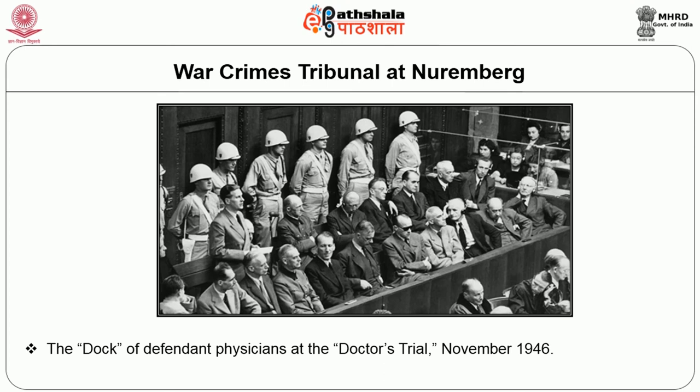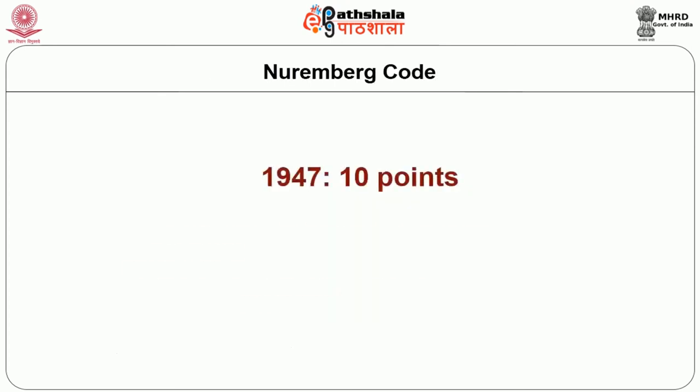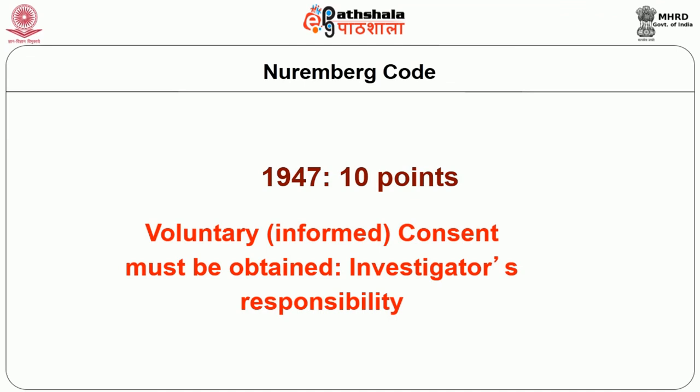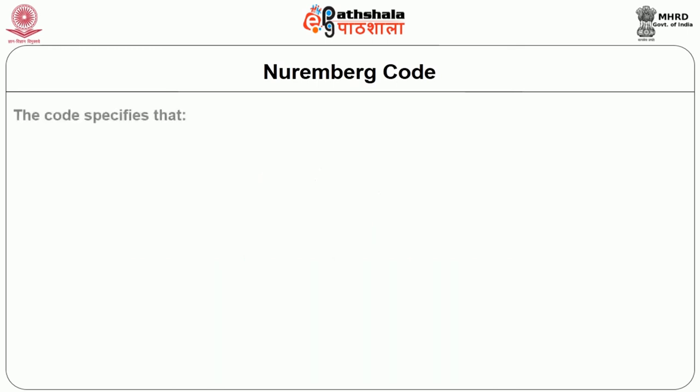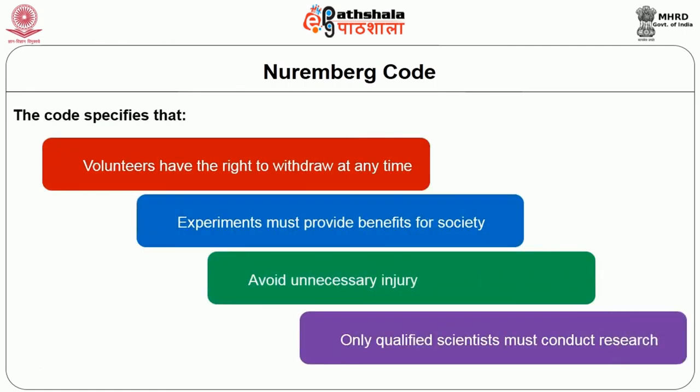The war crime tribunal met in Nuremberg, Germany, and conducted what is called the doctor's trial in November 1946. After the trial, 15 doctors were sentenced to death and many others were given life sentences. What came out at the end of this trial is the Nuremberg Code — the modern first recorded code of conduct for researchers, released in 1947, which had 10 points. The most important point is that voluntary informed consent must be obtained from participants before they are recruited, and it is the responsibility of the investigators themselves to take it. Volunteers have the right to withdraw at any time, experiments must benefit society, unnecessary injury must be avoided, and only qualified scientists must conduct these experiments.